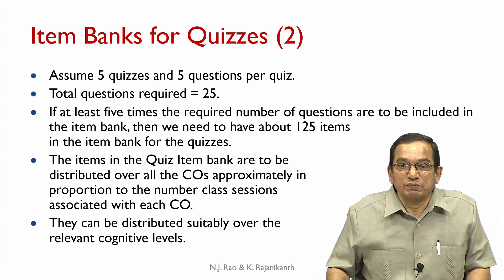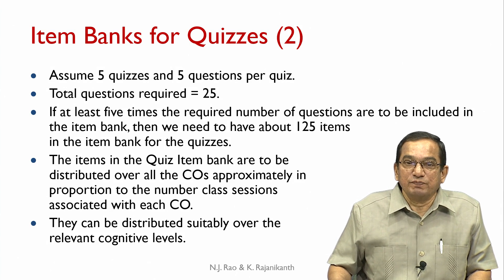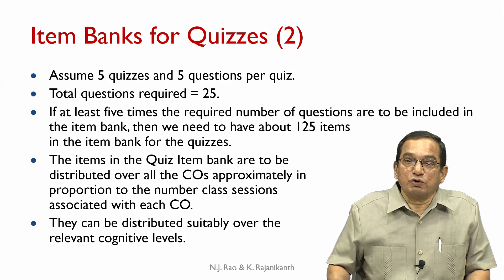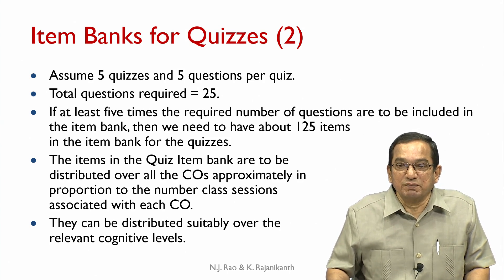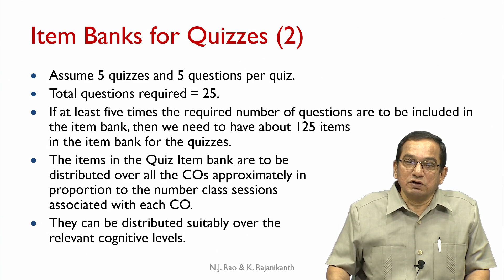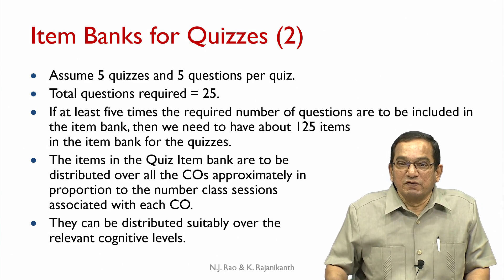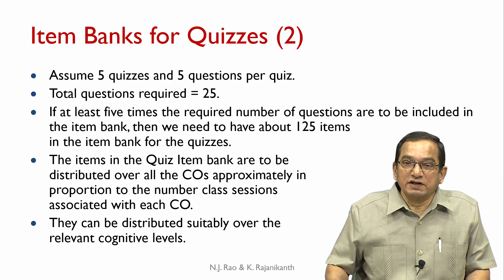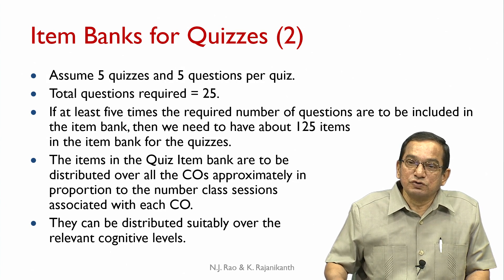If there are five quizzes with five questions per quiz, the total questions required would be 25. If at least five times the required number of questions must be in the item bank, we need about 125 items — this is a rough initial figure, and the item bank will grow subsequently. The items in the quiz bank should be distributed over all COs approximately in proportion to the number of class sessions associated with each CO, and distributed suitably over the cognitive levels of remember and understand.